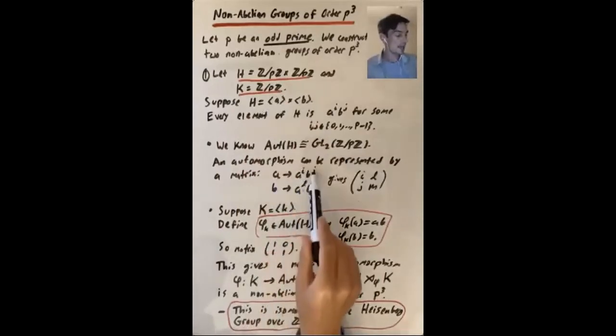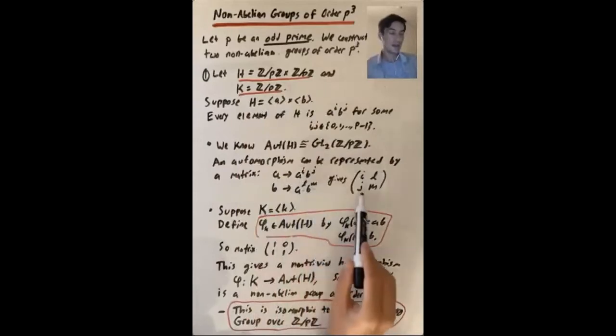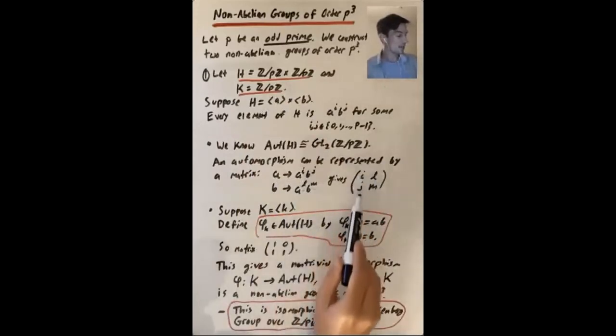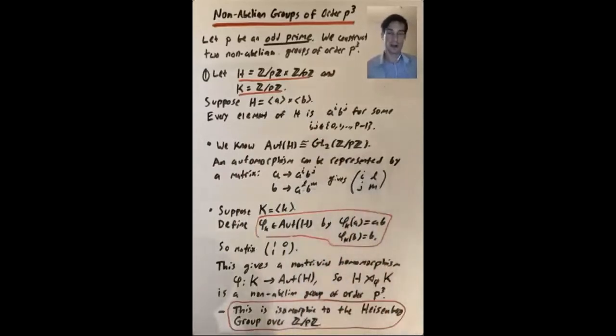So an automorphism is determined by where it sends a generating set of H. If you send a to a^i times b^j, and b to a^l times b^m, that gives the matrix [i j; l m]. So the first column is keeping track of where a gets sent, the second column is keeping track of where b gets sent.